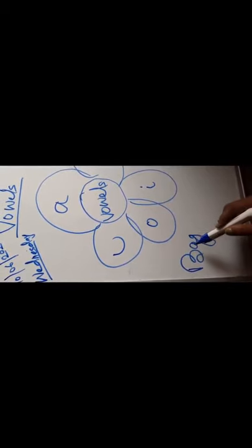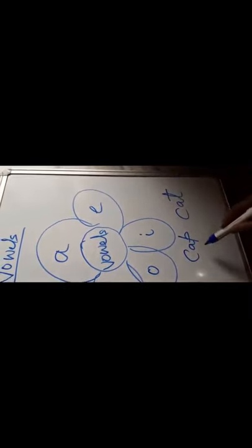Like 'bag' — B, A, G. Bag. The A vowel is here, can you see? Likewise, one more — bag and cap. Then cat. Yes, A is there. They are called A sound words.